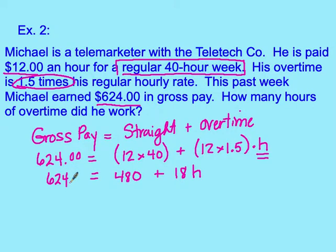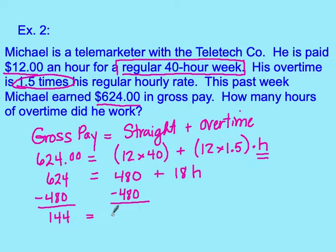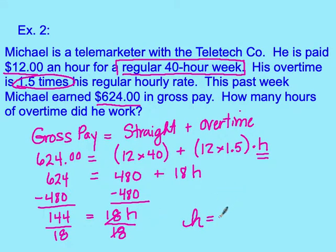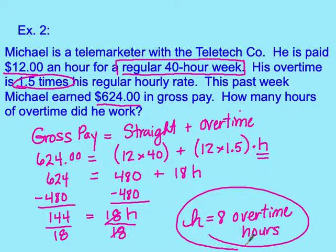Using a two-step equation, we subtract $480 from both sides, leaving $144 equal to $18H. Dividing both sides by 18 gives H equals 8 — meaning Michael worked 8 overtime hours. I'll add your assignment to Google Classroom to practice problems like these covering straight time pay and overtime pay.